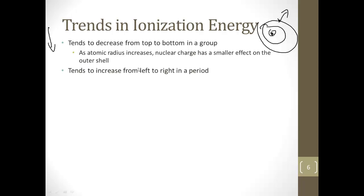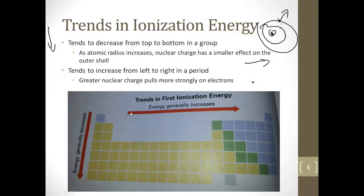Ionization energy tends to increase from left to right in a period. And that's because of that greater nuclear charge - as we go left to right, there's more protons in the nucleus. A greater nuclear charge is going to have a stronger pull on all the electrons. So if we look at our picture here, as we go across, ionization energy generally increases. As we go down in a group, the ionization energy generally decreases. Go ahead and draw these arrows with ionization energy increases and ionization energy decreases off to the side of your reference table.